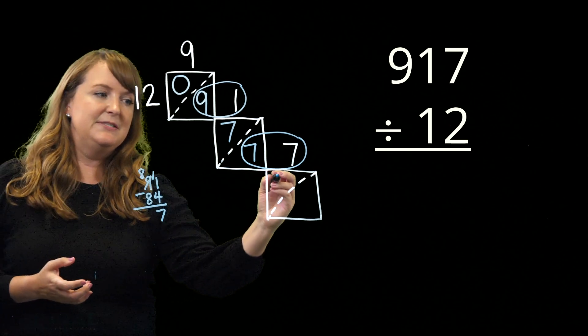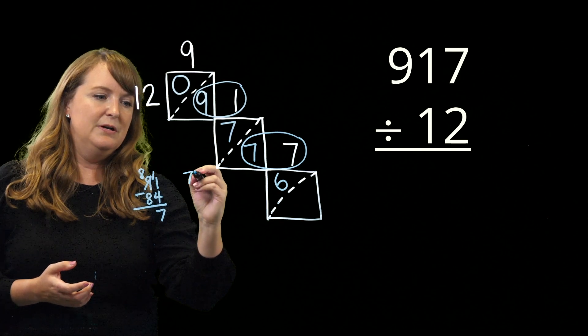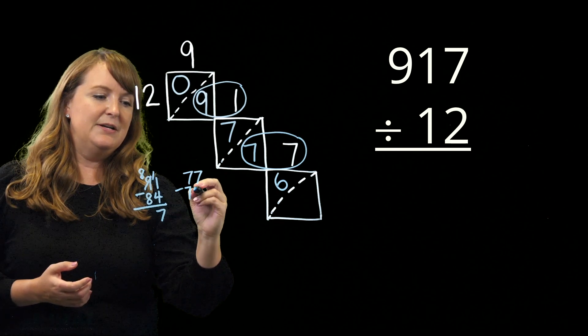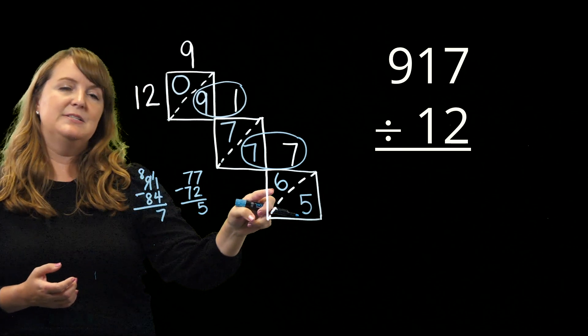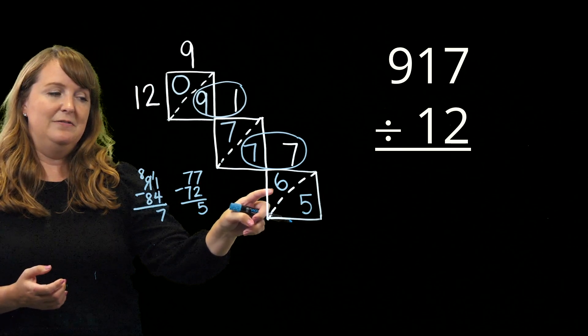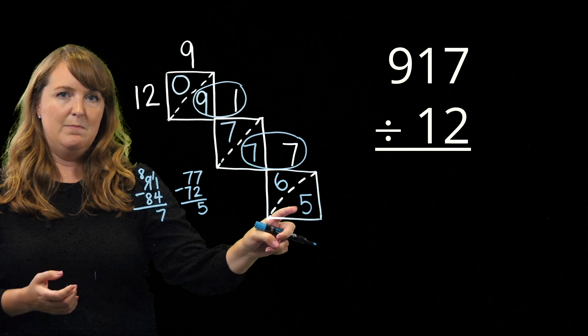Well, let's see. 7 times 6 is 72. So 77 minus 72 has a remainder of 5. So I can make 6 full groups of 12, and then I have 5 remaining.